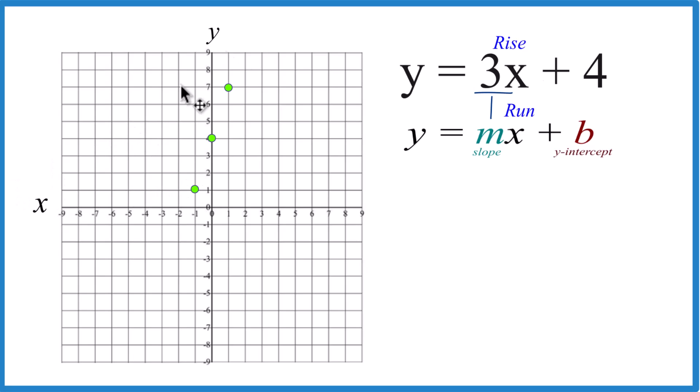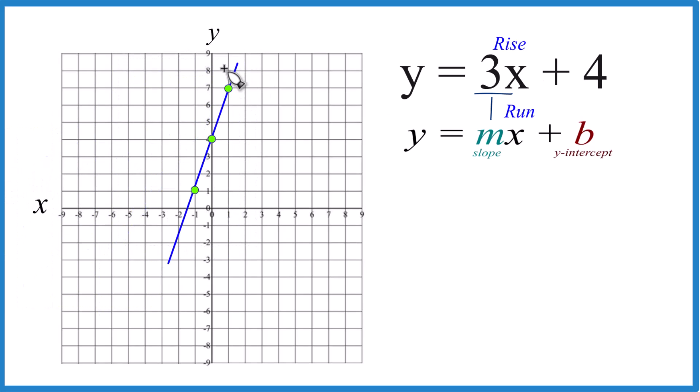So now we have this line here for y equals 3x plus 4. Let's put a line through that. Then we'll put arrows here to show it goes to infinity. And that's the graph for y equals 3x plus 4 using slope-intercept form. This is Dr. B, and thanks for watching.